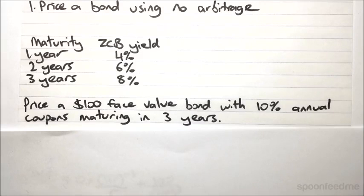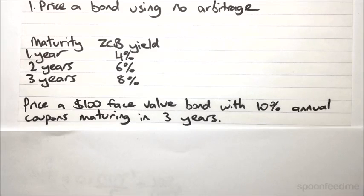So what cash flows are we actually going to get from this coupon bond? We know that we'll get two coupon payments of $10 in the first and second years. Then in the third year we'll get a payment of $110, which consists of both the face value and the last coupon payment. So we want two zero-coupon bonds with $10 face values — one with a one-year maturity and one with a two-year maturity.